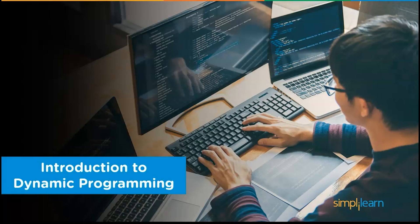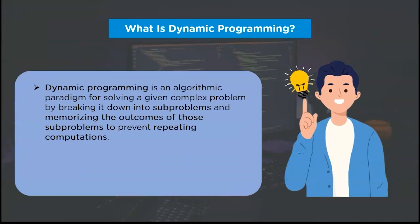Moving ahead, let's look at the broader picture of what dynamic programming is. Dynamic programming is defined as an algorithmic paradigm that solves a given complex problem by breaking it into several sub-problems and storing the results of those sub-problems to avoid computing the same sub-problem over and over again. The divide and conquer strategy is quite similar to the dynamic programming approach — we solve problems in each of these paradigms by combining the solutions of smaller sub-problems. However, in divide and conquer, the sub-problems do not repeat themselves, whereas in dynamic programming, the condition is entirely opposite.